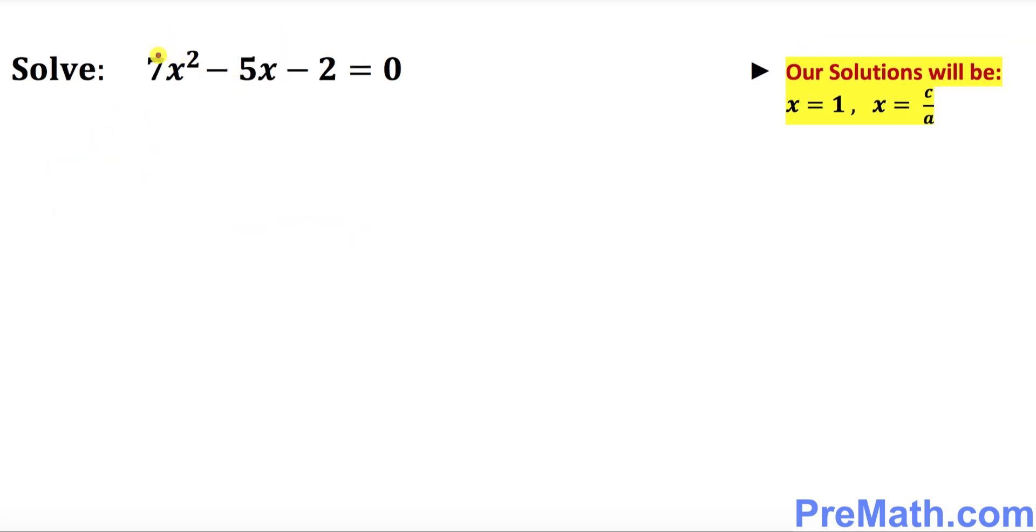And finally in this example once again our a is 7, b is negative 5, c is negative 2. If you add them up it turns out to be 0. Thus one of the solutions is going to be x equal to 1. The other is going to be c which is negative 2 over a which is 7. So that's our solution.